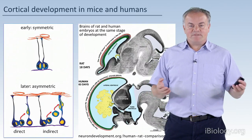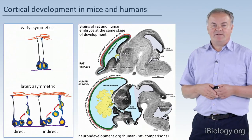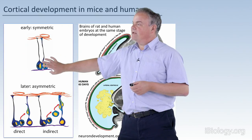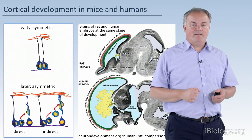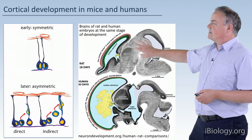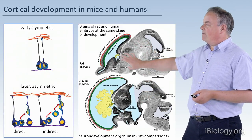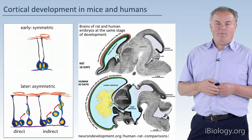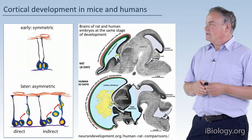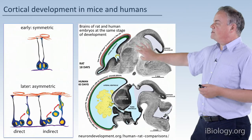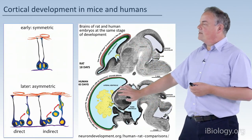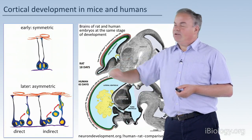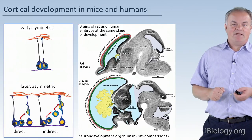When we move from rodents to humans, there are two characteristic differences. First, the initial set of symmetric divisions lasts a lot longer in humans and primates. Comparing a rodent brain to a primate brain at a comparable stage of development, the more posterior brain parts are actually very similar, but the cortex is vastly expanded in the primate brain. This is because these cells had a lot more time to divide symmetrically and to amplify.